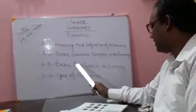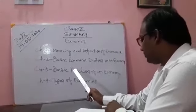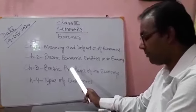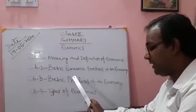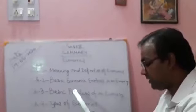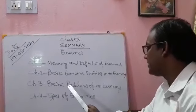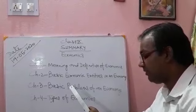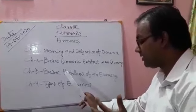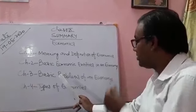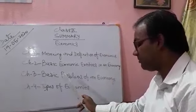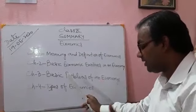In the third chapter — the basic problems of an economy — you have to study the meaning and causes of economic problems. The central and basic problems of an economy include: what to produce and in what quantities, how to produce, and for whom to produce. Efficient use of resources is also a basic problem, as every economy faces different obstacles in the path of efficient functioning.